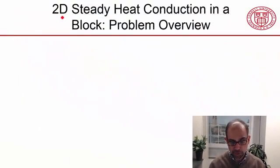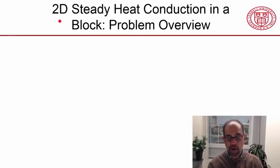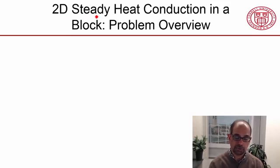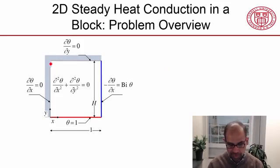Here we have two-dimensional or 2D heat conduction, so temperature varies in two directions, X and Y. And we'll say the conduction is steady, so there's no variation with time. And we have a block, and we are given the boundary value problem here, corresponding to this 2D steady heat conduction.